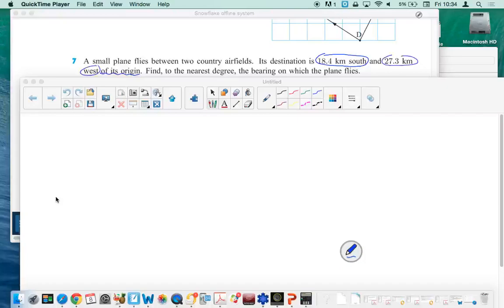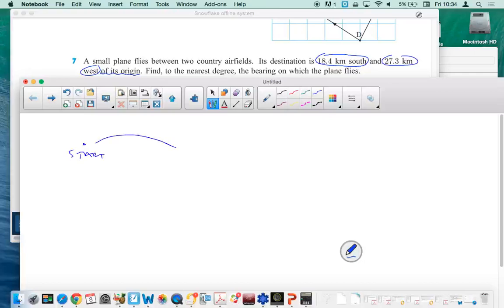Its destination - so basically what you can think of is we're starting somewhere, then we've got a destination going here. Its destination is a certain distance south and a certain distance west of its origin. So your origin is basically, let's just put a starting point, and what you do is you break it down into steps for your diagram. Now you've got north, south, east, and west here. North is always the top of your page, so that means you're going to end up getting parallel lines if you draw north lines in all.